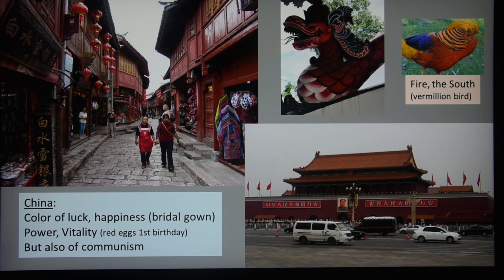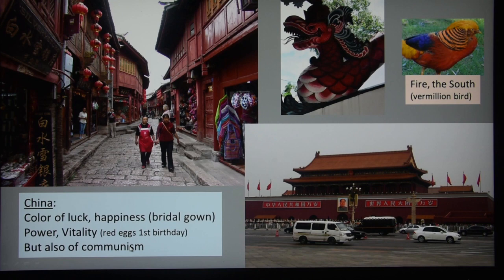Whereas in the West girls may want to wear white — the color of virginity — in China they may want to marry in a red bridal gown. There are even things like painting eggs red for a child's first birthday to protect it against disease. But it's also the color of communism — first socialism — it was the blood and the fight against the establishment and the rich that became the symbol of socialism and later communism. For that reason it's an important color in China, and it's also symbolically the color of the south.